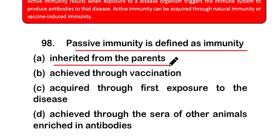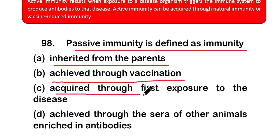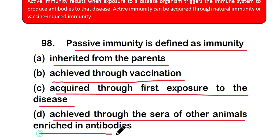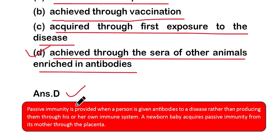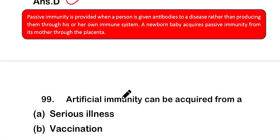Question number 98: Passive immunity is defined as immunity that is — option A: inherited from the parents, option B: achieved through vaccination, option C: acquired through past exposure to the disease, or option D: achieved through the sera of other animals enriched in antibodies. The right answer is option D. Passive immunity is provided when a person is given antibodies to a disease rather than producing them through their own immune system — for example, a newborn acquires passive immunity from its mother through the placenta.